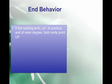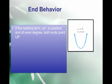Let's talk about end behavior, also called the leading coefficient test. All you need to do is look at your leading term — the highest degree term in your polynomial. Given the leading term ax to the n: if a is positive and n is even, both ends point up. If a is negative and n is still even, both ends point down.